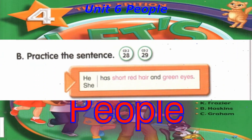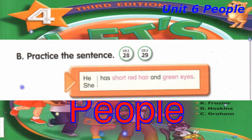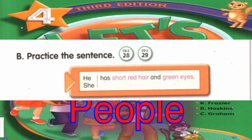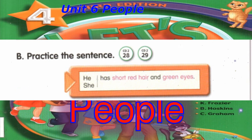Track 28, B. Practice the sentence: He has short red hair and green eyes.